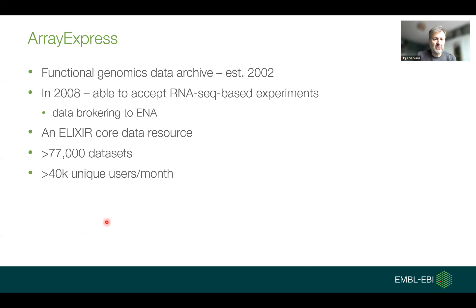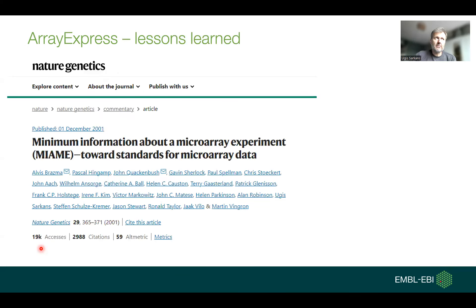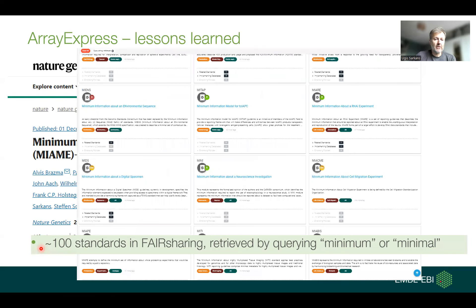Currently there are more than 77,000 datasets and a significant number of unique users per month. One of the things we learned from more than 20 years of experience is that early on we had minimal information about the microarray experiment — the MIAME guidelines — a very well-known concept. If we look in FAIRsharing and query the standards section by minimum or minimal, we find more than 100 entries, and most of them have been inspired by the MIAME work.